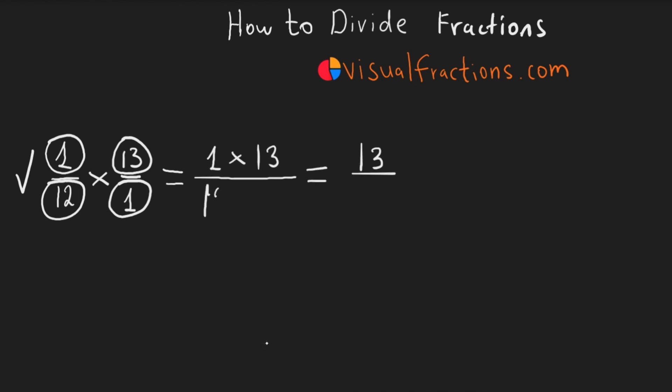Next, 12 multiplied by 1 gives us 12. Hence, 1/12th divided by 1/13th equals 13/12ths.